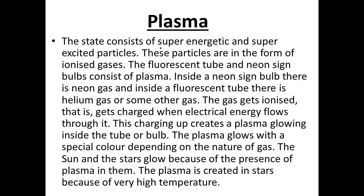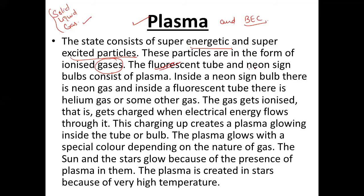The next topic is plasma — another state of matter. So far we have discussed three states: solid, liquid, and gas. Two other states of matter are plasma and BEC. What is plasma? Plasma consists of super energetic and super excited particles in the form of ionized gases. Examples include fluorescent tubes and neon sign bulbs, which consist of plasma.